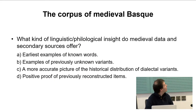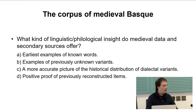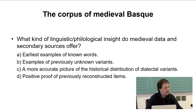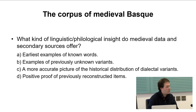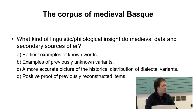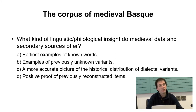So what kind of insight do this medieval data and secondary sources offer? Well, they offer us the earliest attestations of some words of the basic lexicon. We have also been able to recover some variants that were not previously attested. They also offer us a more accurate picture of the historical distribution of dialectal variants. And finally, and most interestingly for the purpose of this talk, they also offer positive proof of previously reconstructed forms.